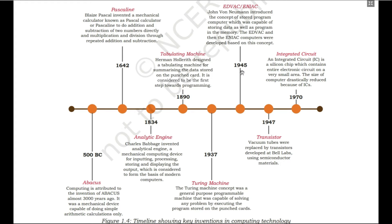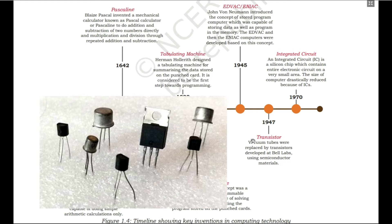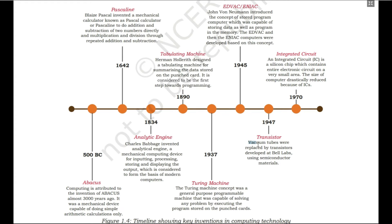After 1945, humans were able to discover something called transistors. Transistors were relatively small in size and replaced vacuum tubes. Transistors were developed at Bell Labs and were made using semiconductor materials. If you don't know what semiconductor materials are, you will learn about them in your modern physics syllabus. The introduction of transistors made of semiconductor materials was a big change in the field of computers.